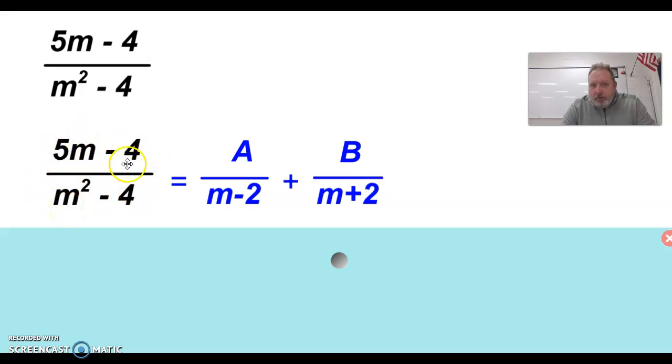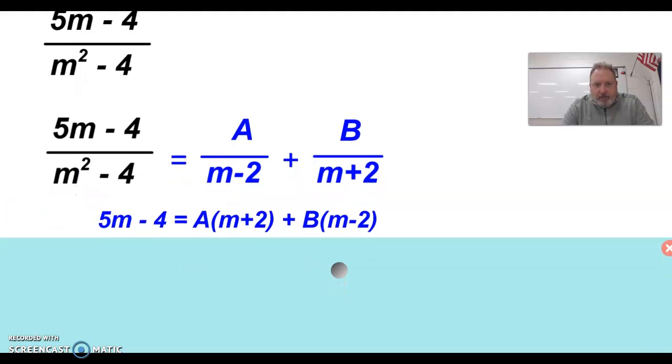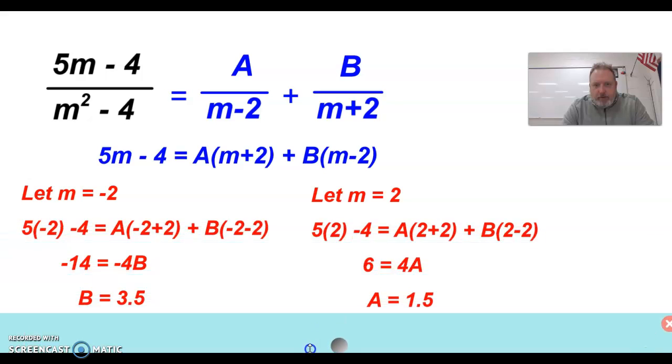When I multiply, I'm going to end up with the numerator, 5m minus 4, equal to A times m plus 2, and B times m minus 2. I want to strategically pick values, in this case for m, so that I can get a 0 to eliminate A or B. So I'm going to plug in negative 2 first, and then I'm going to plug in positive 2. And that will eliminate A to allow us to solve for B, and then eliminate B to allow us to solve for A.